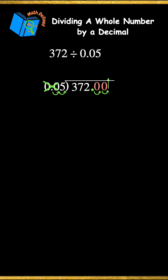From here I divide like I normally would. 5 will not divide into 3, so I will divide 5 into 37. 5 divides into 37 7 times. 7 times 5 is 35, and 37 minus 35 is 2.